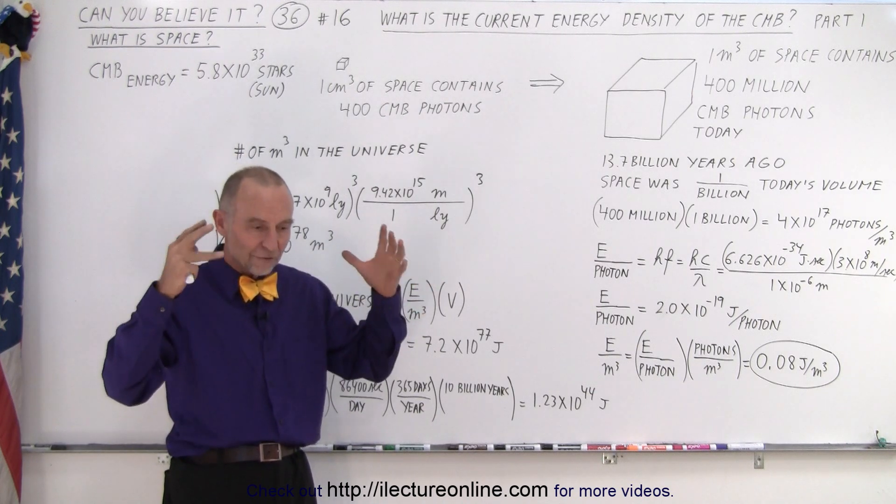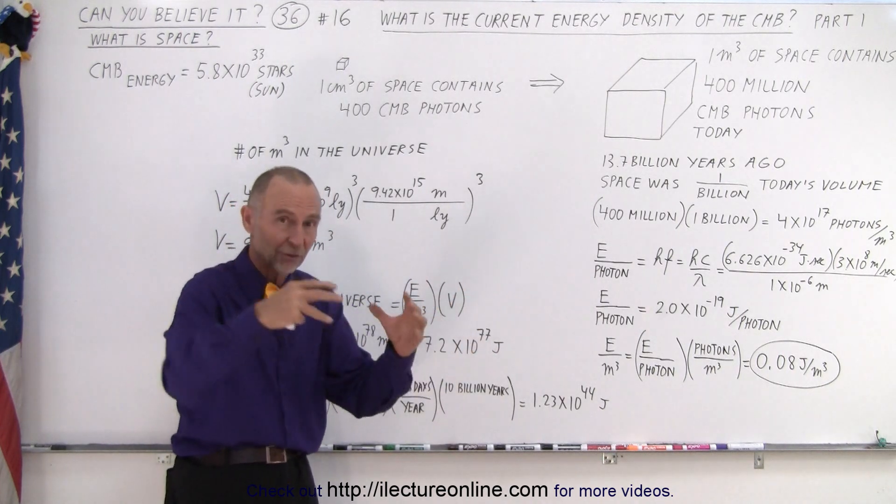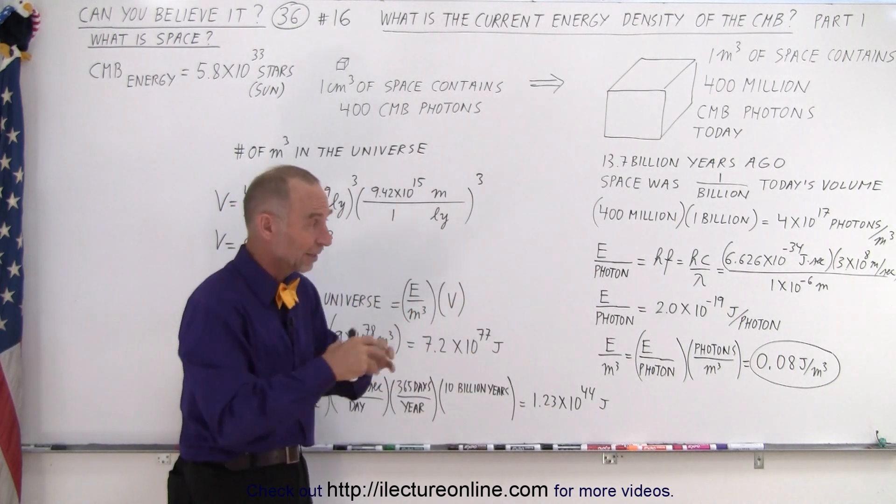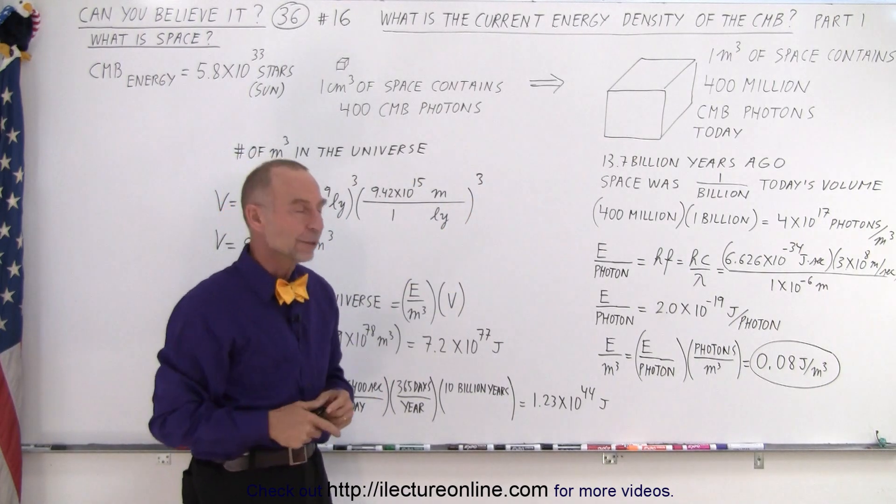But there are a lot of cubic meters in the universe. And again, it's the visible, current visible universe, but back then, it contained a lot more space, because space was a lot more compressed and dense, and a lot more CMB photons. Everything is spread out a billion-fold now in volume.